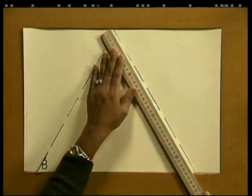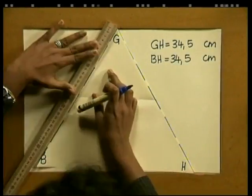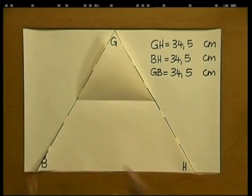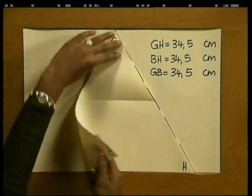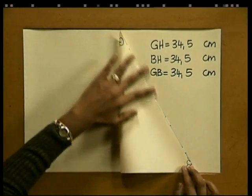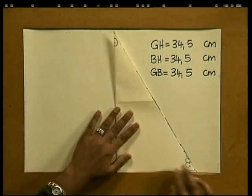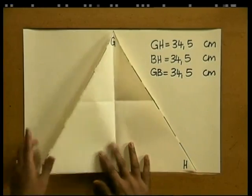So we have constructed a model of the equilateral triangle. The first thing we will try to do is to find all the possible lines of symmetry in the equilateral triangle. Do you remember what a line of symmetry is? The symmetry line divides a shape into equal parts. So let's fold GB onto GH — folding, and there we have it. We see that angle GBH fits directly onto GHB. Do you think we can find more lines of symmetry in the equilateral triangle?